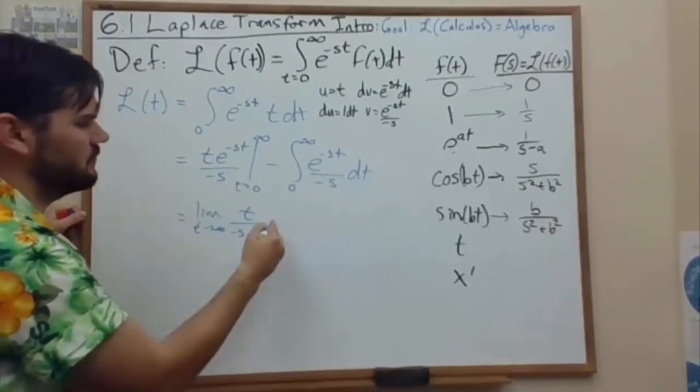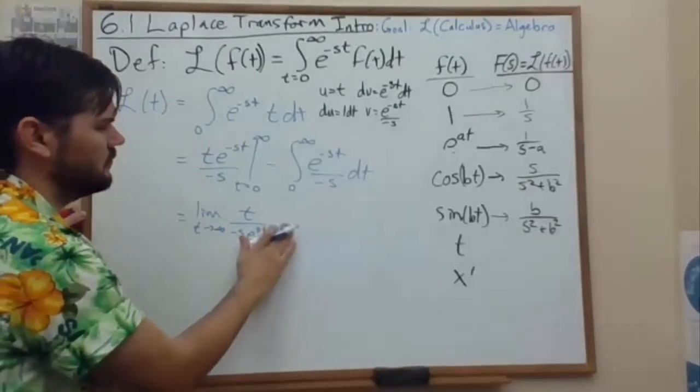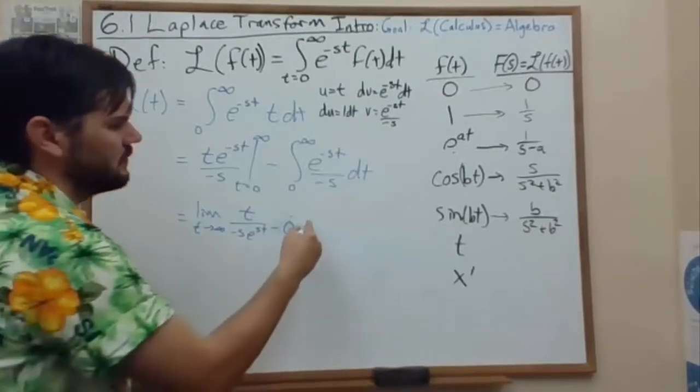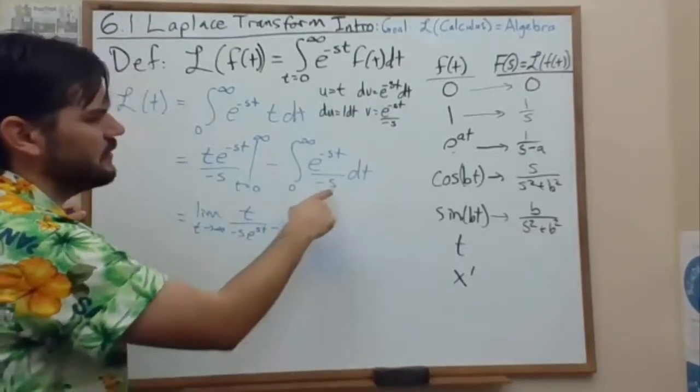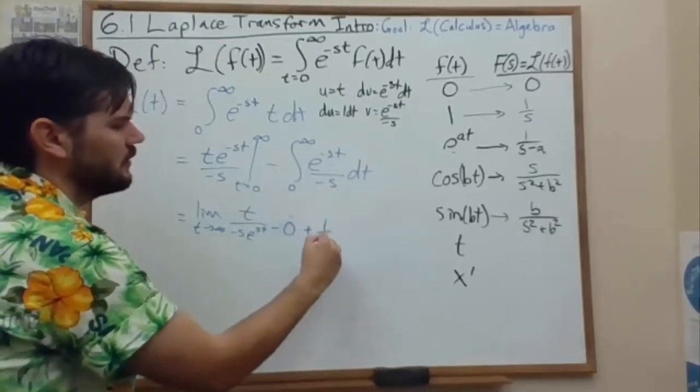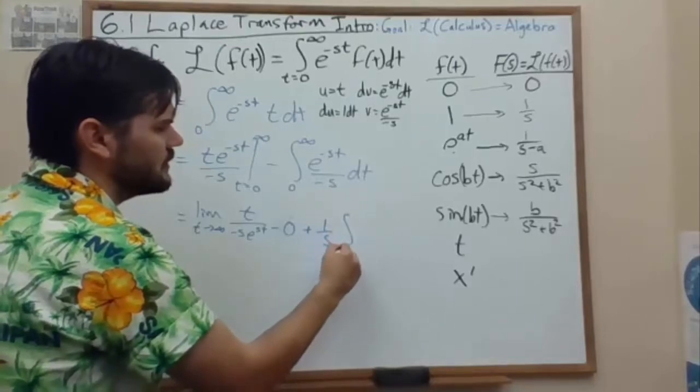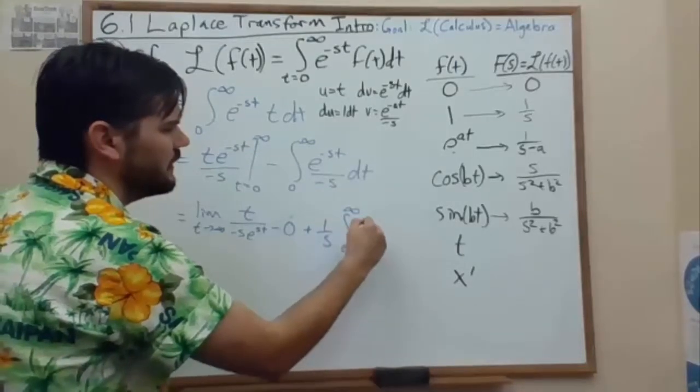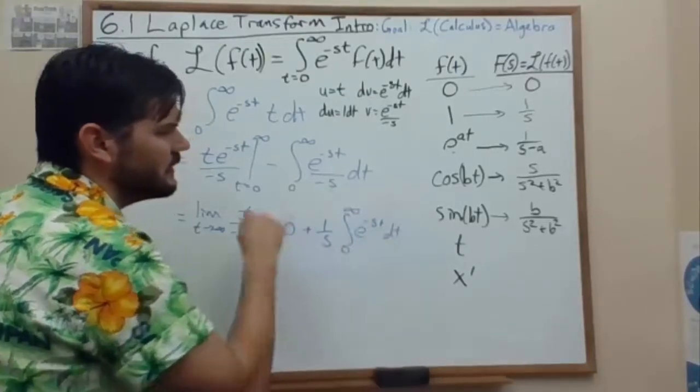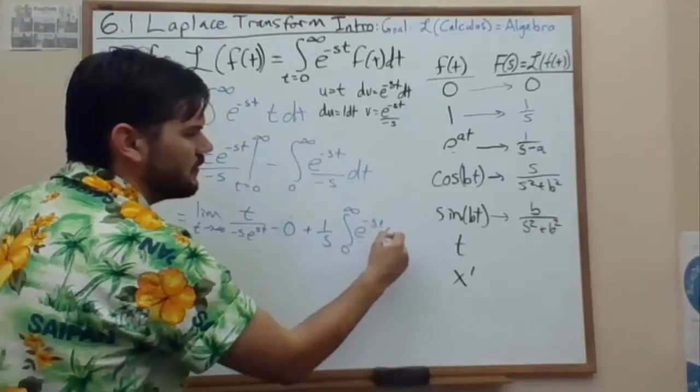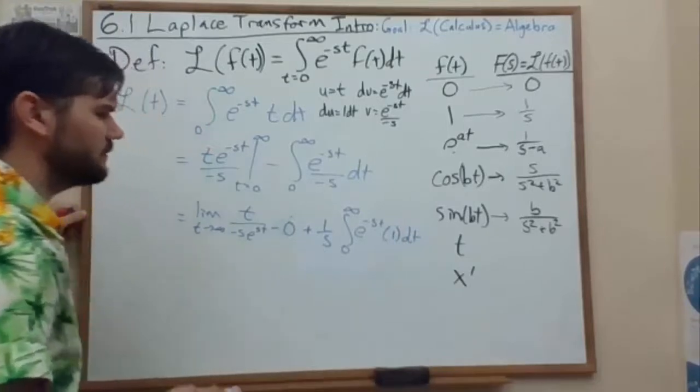And then for my last integral, I'm going to pull out that constant 1 over s, and I have left integral from 0 to infinity of e to the negative st dt, which is the transformation of 1.